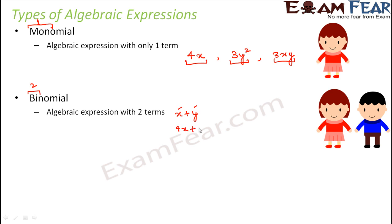Similarly, 4x plus 2 is a binomial because it has two terms, 4x and 2. Again, 3y squared plus 3xy is a binomial because it has two terms, 3y squared and 3xy. So all these are examples of binomials.